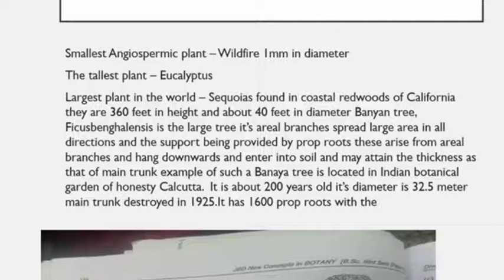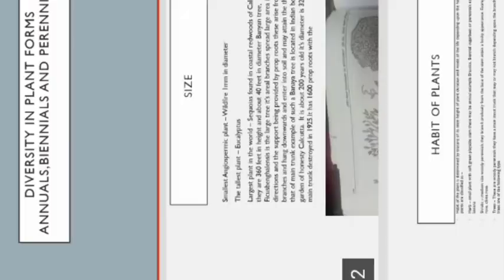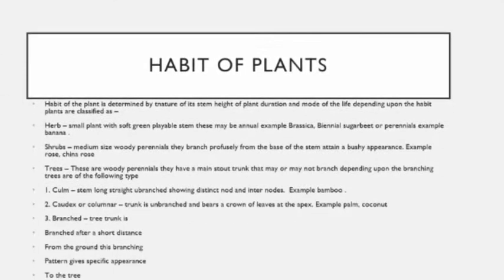If the tree is branched, the trunk bears hard and woody branches at some distance from the ground. Based on branching, trees fall into the following categories. First is the clump, where the stem is long, straight, and unbranched, showing distinct nodes and internodes — example is bamboo. Second is the caudex or columnar, where the trunk is unbranched and bears a crown of leaves at the apex — example is palm and coconut.